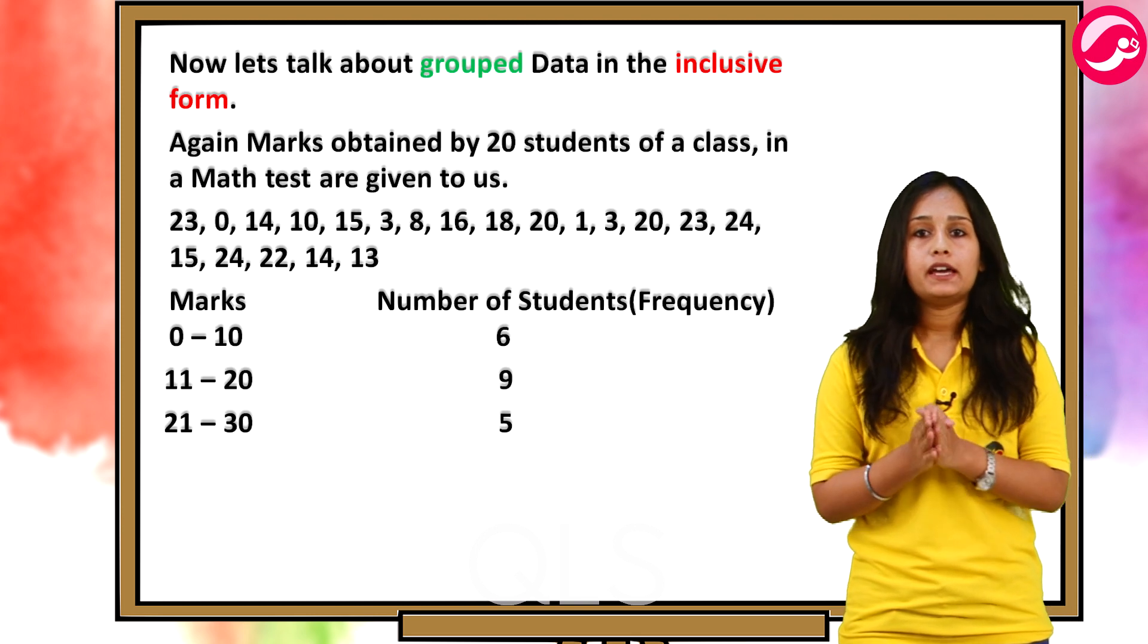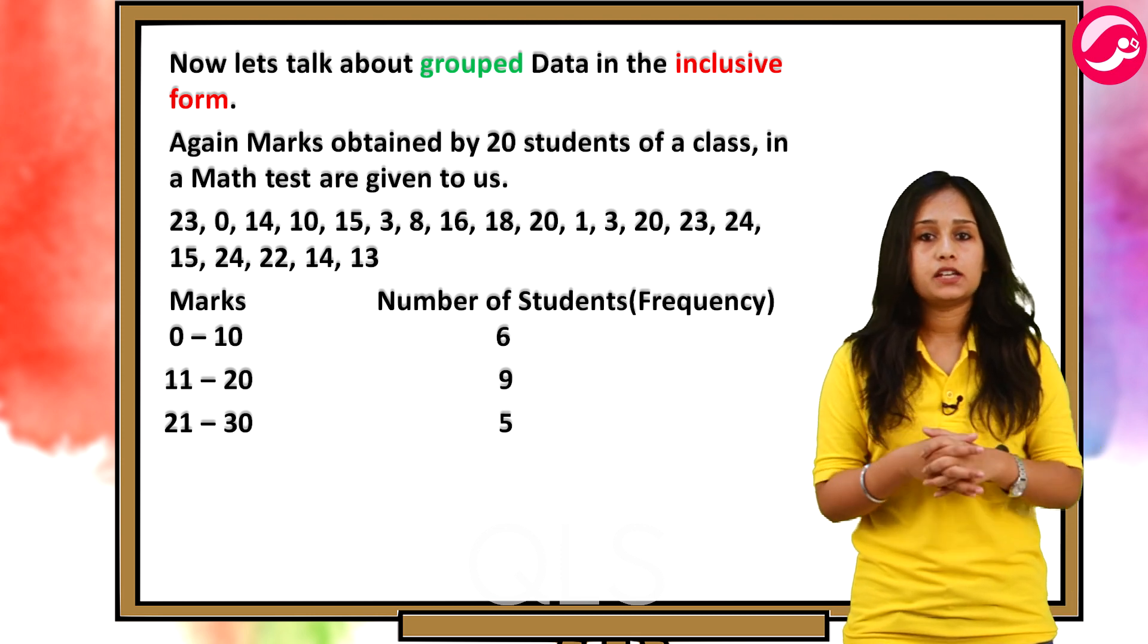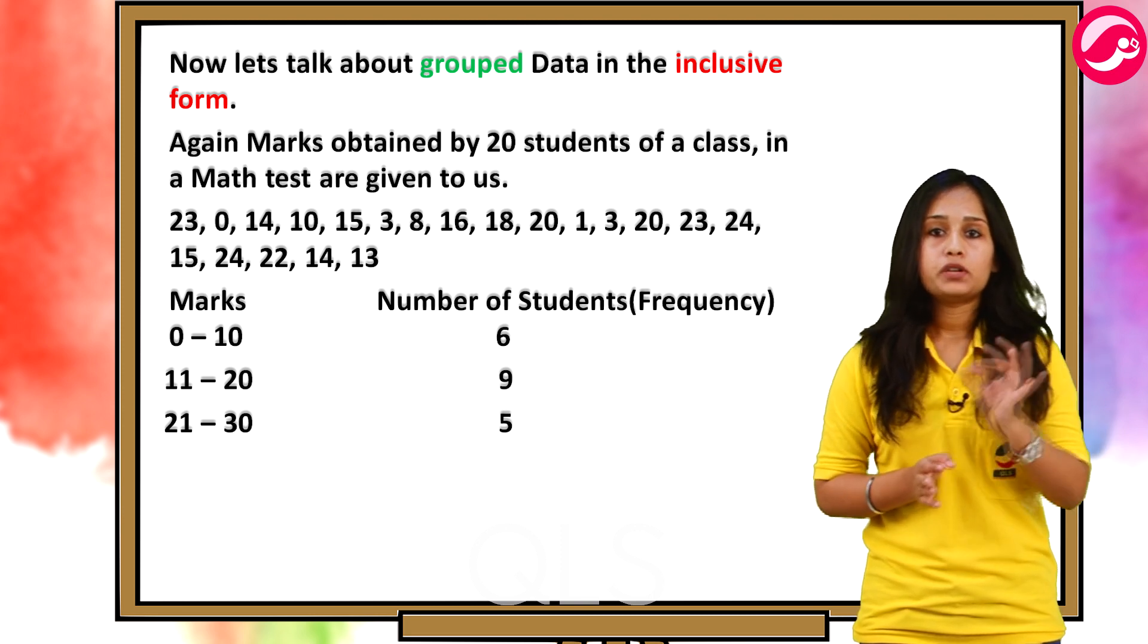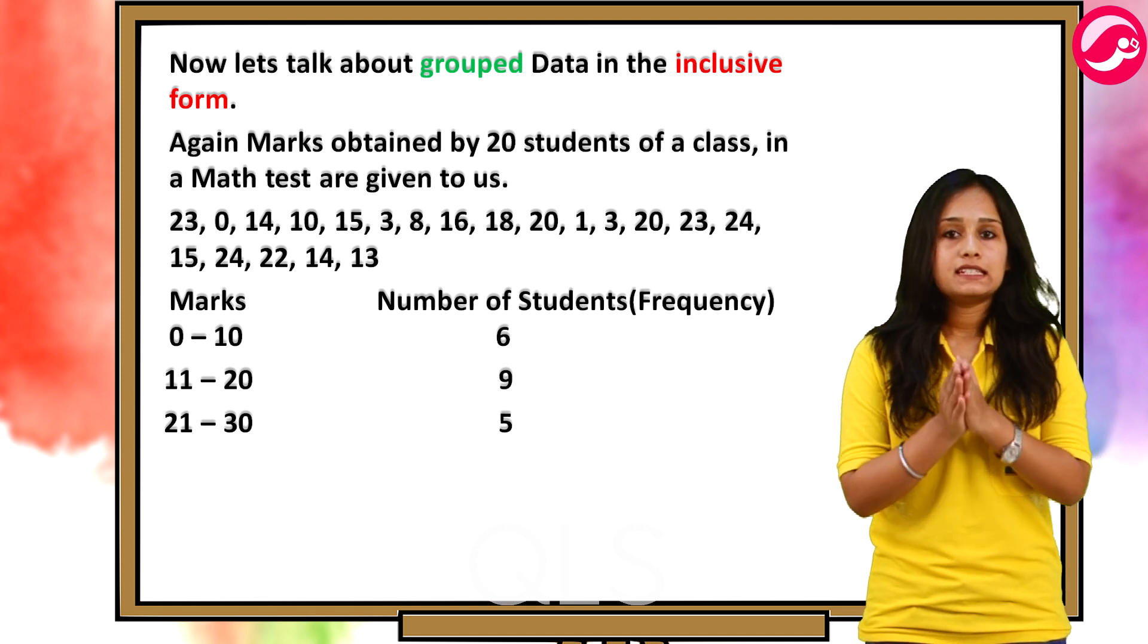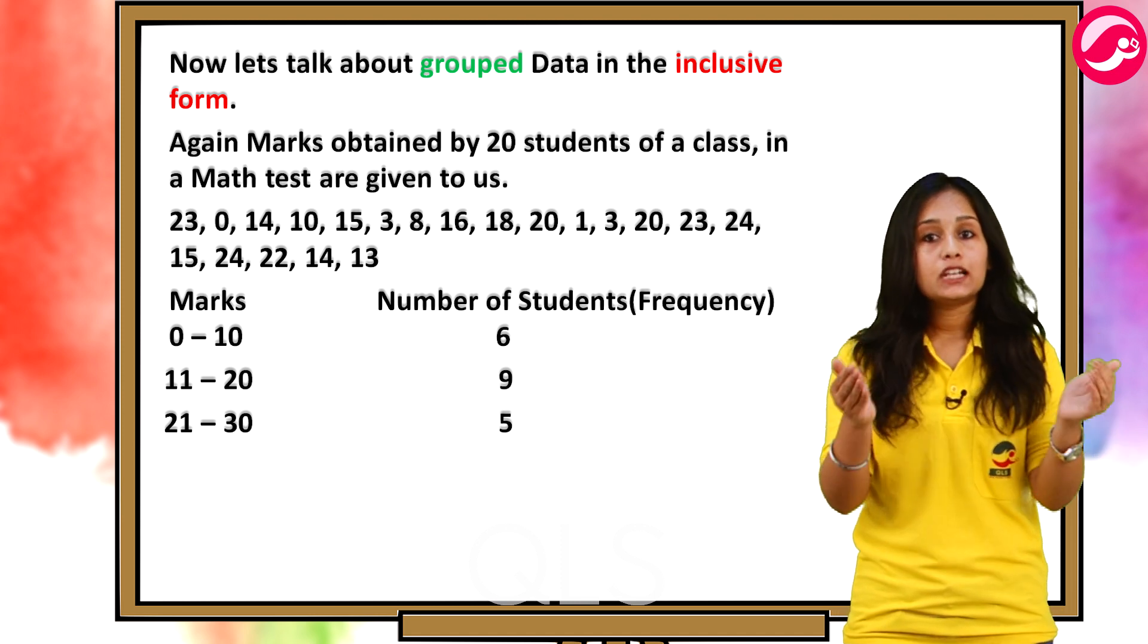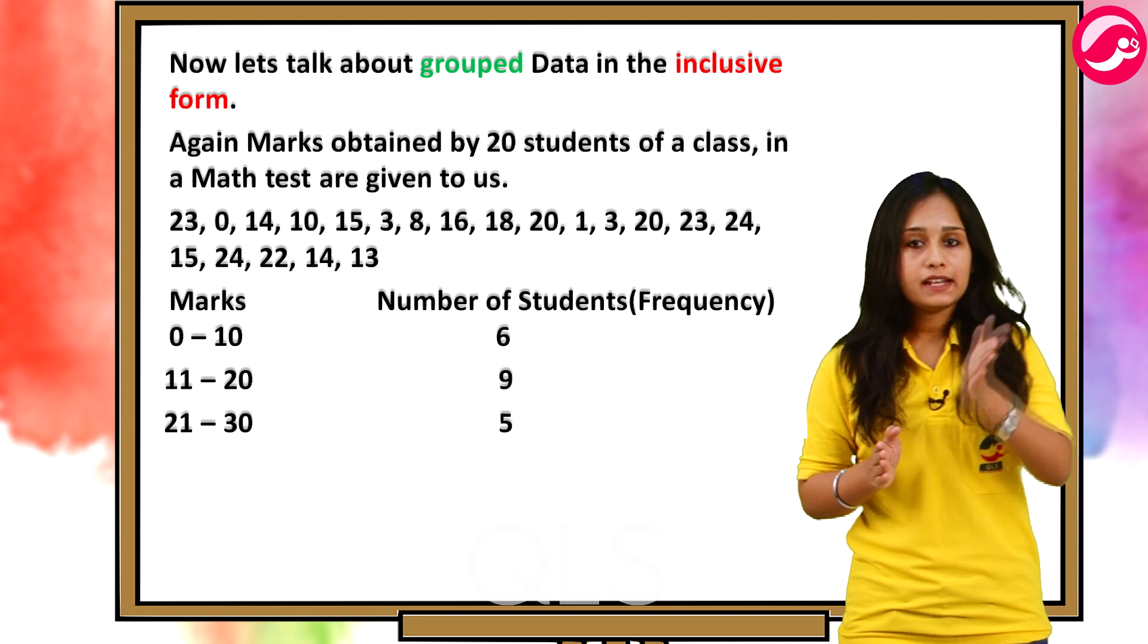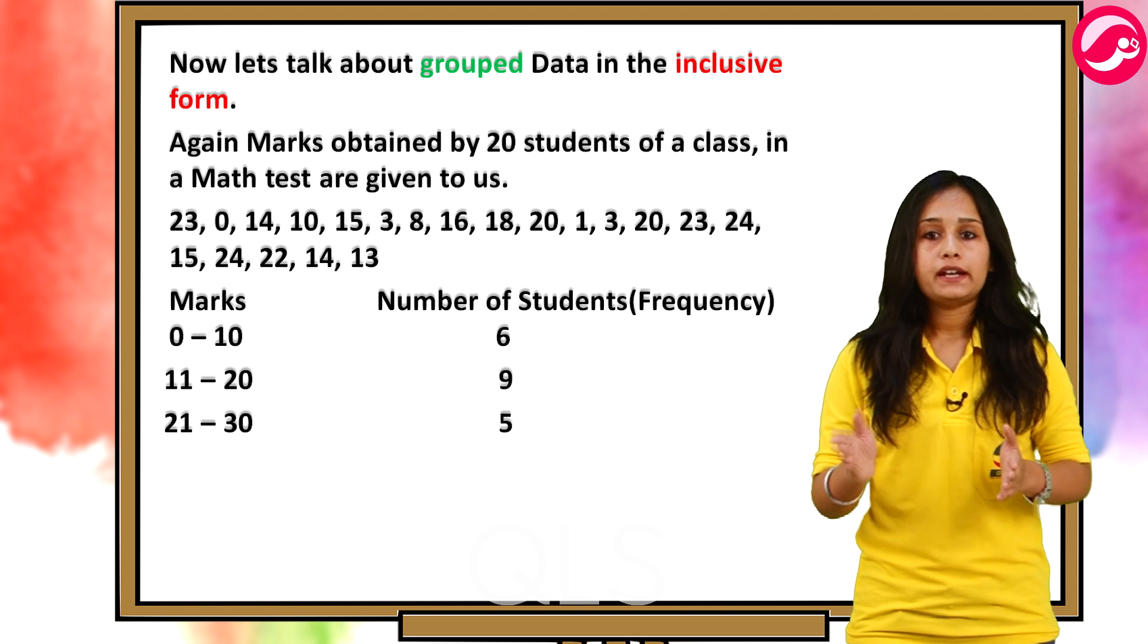Now, let us talk about grouped data in the inclusive form. Again, marks obtained by 20 students of a class are given in a math test. Here also, we arrange the data into different groups called class intervals that is 0 to 10, 11 to 20 and 21 to 30. Now, in this case, since this is the inclusive form, 0 to 10 means between 0 and 10 including 0 and 10. Here, 0 is the lower limit and 10 is the upper limit. 11 to 20 means between 11 and 20 including 11 and 20. Here, 11 is the lower limit and 20 is the upper limit.